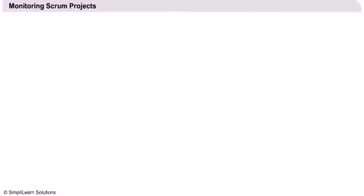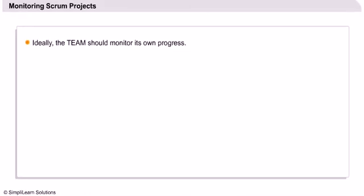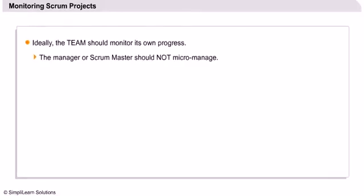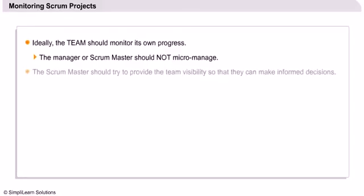Let us establish some common ground before diving into techniques or measures to monitor Scrum projects. First of all, it is important to understand that in Scrum, the team should ideally be managing its own progress. The Scrum master or the manager should not try to micromanage the team or interfere with this process. That said, the Scrum master should try to provide visibility to the team about progress or lack of it, so that the team can make its own decisions.